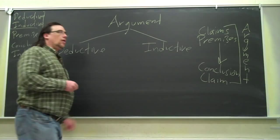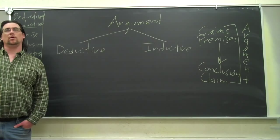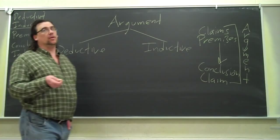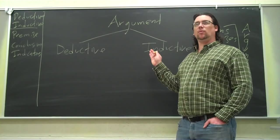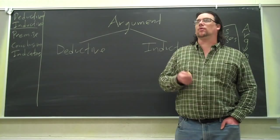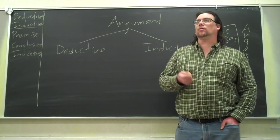What determines whether an argument is deductive or inductive has to do with that arrow. How are the premises connected to the conclusion? If you have a deductive argument, what it's saying is if the premises are true, that conclusion has to be true, it must be true, it's necessarily true. An inductive argument is a bit weaker. It says if those premises are true, the conclusion is probably true or likely true.